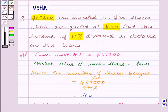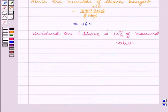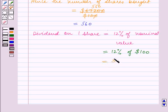Now the nominal value of each share is $100. This is equal to 12% of $100, which is 12 divided by 100 times $100. The zeros get cancelled and this is equal to $12.